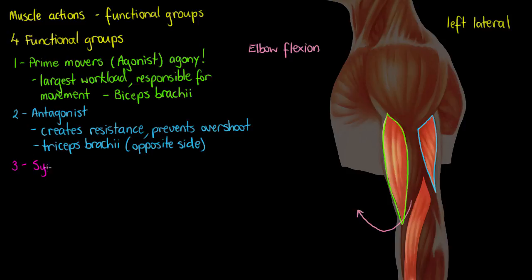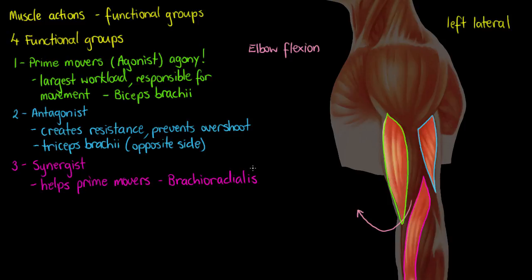The third functional group is called a synergist. A synergist is a muscle that helps our prime mover — we don't want to put all of the load of a specific movement on one muscle. The brachioradialis is our synergist for the bicep in elbow flexion. If something is creating synergy, it means it's working in harmony, helping achieve the same job. A synergist adds force to that movement and also helps stabilize the bone and joint that the prime mover is working against.